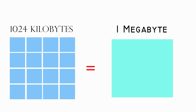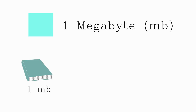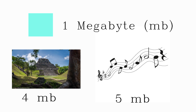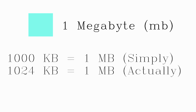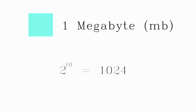1024 kilobytes is a megabyte. One megabyte is equivalent to a small book. An MP3 audio file of a few minutes, or a 10-megapixel image from a digital camera, would take up about 3 megabytes. Most people simply say that 1000 kilobytes is a megabyte, but actually 1024 kilobytes is a megabyte. The reason is 2 to the power of 10 equals 1024.